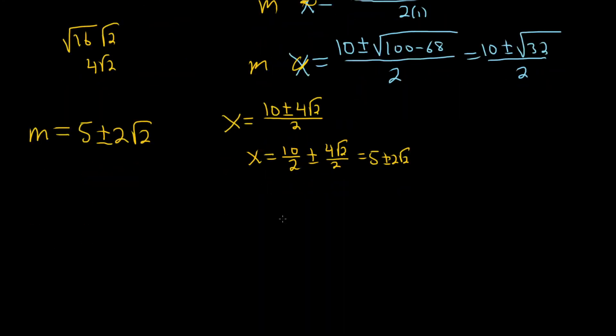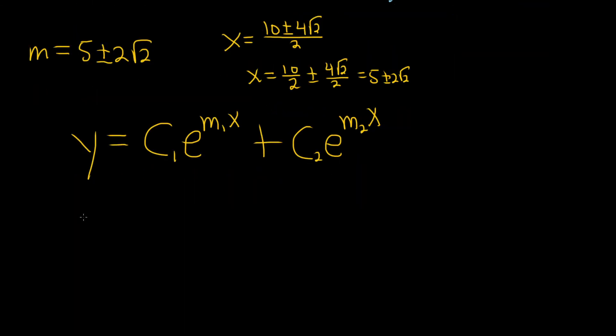But now we can get the answer, and the answer should be correct. So y equals c1, and the formula is e to the m1x, plus c2, e to the m2x. And so what you do is you basically just plug in these m's in here.